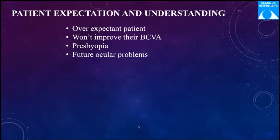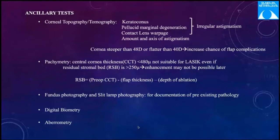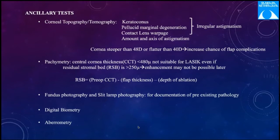The 480-micron central corneal thickness and 250-micron residual stromal bed are important criteria, but not the only ones. There are naturally thicker and thinner corneas, and some thinner corneas are biomechanically more stable than thicker ones. Pachymetry alone is not enough — we must also look at corneal biomechanics. The single numbers of 250 or 480 are not taken as absolute rules now. Patients with keratoconus siblings should also be avoided.